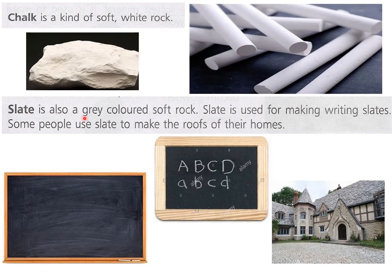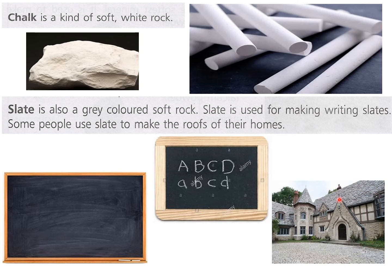Slate is also a gray colored soft rock. Slate is used for making writing slates — this is a writing slate — and blackboards. Also, some people use slate to make the roofs of their homes. You can see this kind of roof made with the help of slate stone.